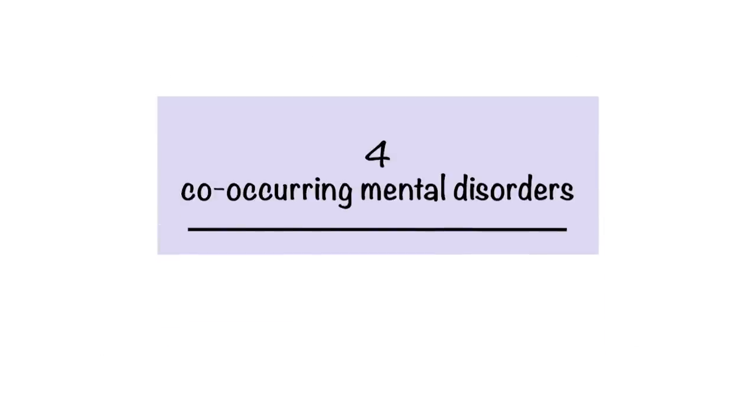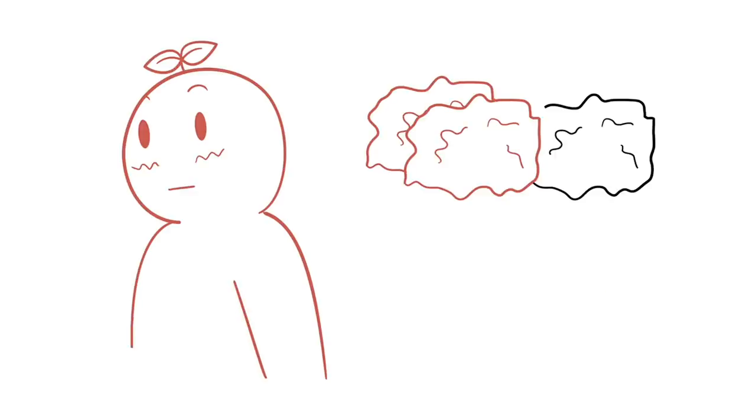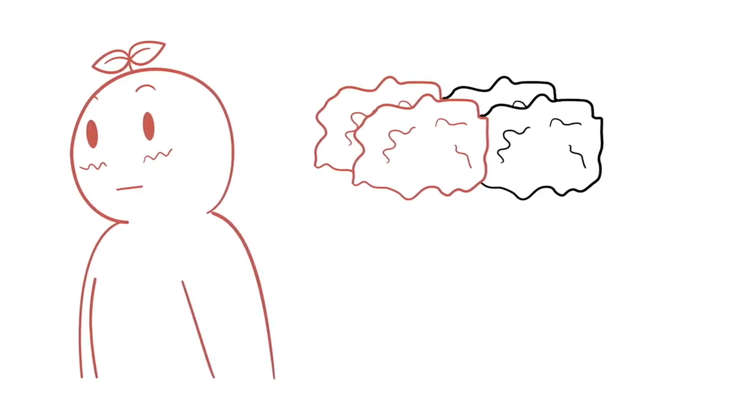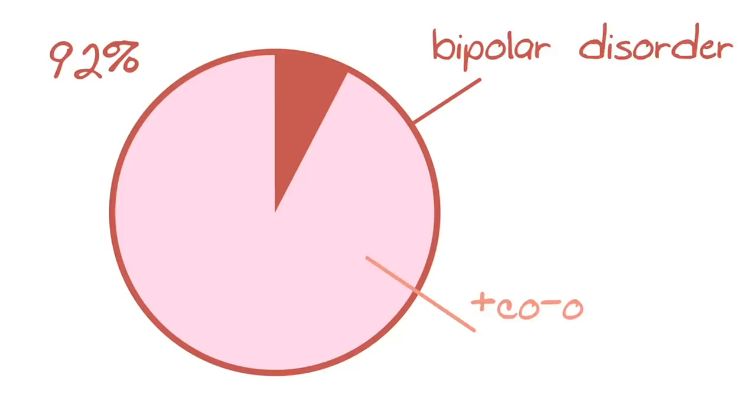Number 4: Co-occurring mental disorders. Many people with bipolar disorder develop another co-occurring mental disorder as well. According to a study by the US Department of Health and Human Services, about 92% of individuals with bipolar disorder will experience a co-occurring mental disorder in their lifetime.